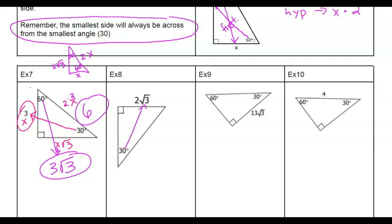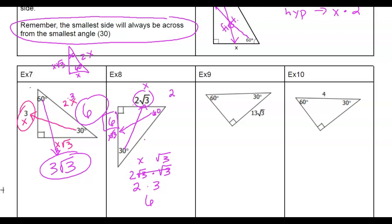Let's look at example eight. I have the side across from the 30, which is 2 root 3. To find the side across from the 60, we take x times root 3: 2 root 3 times root 3. Root 3 times root 3 is 3, times 2 gives me 6. The hypotenuse is double x: 2 root 3 times 2 — you can only multiply outside numbers — so two times two is 4 and root 3 stays, giving 4 root 3.